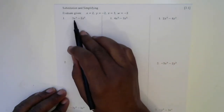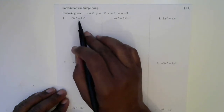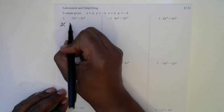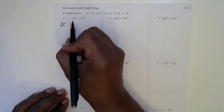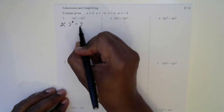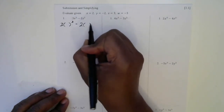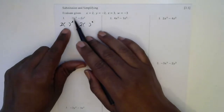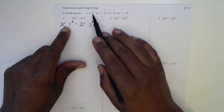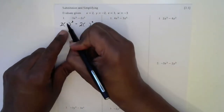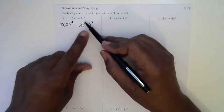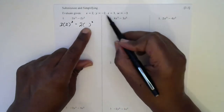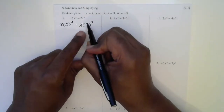For every variable, you're going to replace that with a parenthesis first. So this will be three parenthesis to the third power minus two parenthesis to the second power. Now we're going to look for x here. The x was a 2, so a 2 goes in here. And the z, which goes in this parenthesis, says it was a 3, so it goes here.